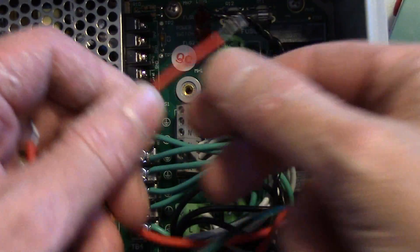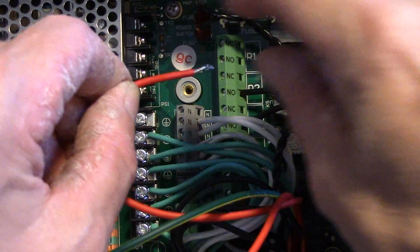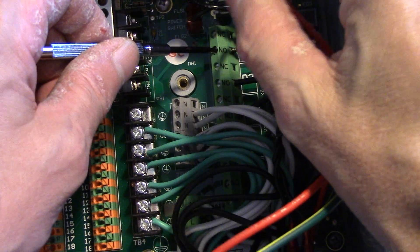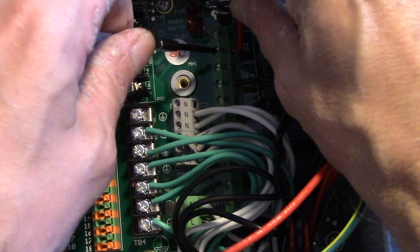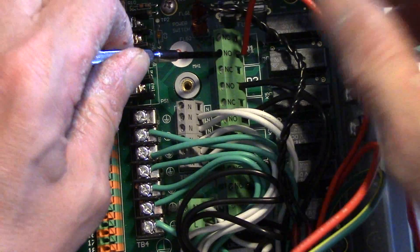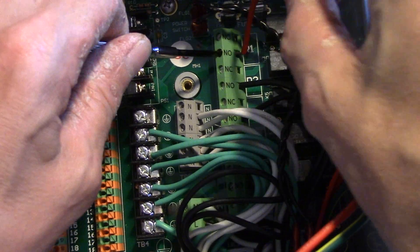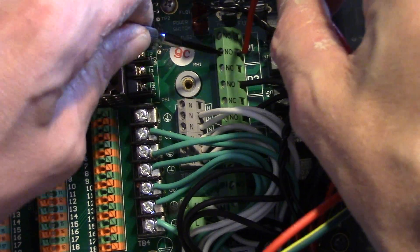Then I'll take one of the wires and put it into R1, the normally open. Use a small flathead screwdriver to loosen the set screw, place the wire in, and then tighten it down, making sure you have a good firm connection.